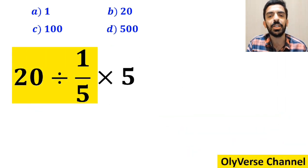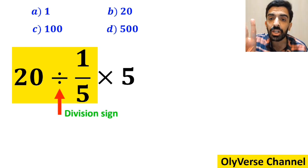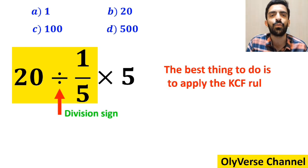So, first we start with the expression 20 divided by 1 over 5. Okay, whenever we come across a division sign between two terms, the best thing to do is to apply the KCF rule.